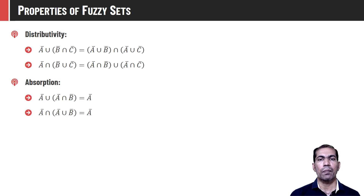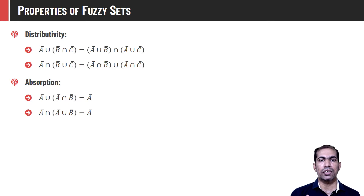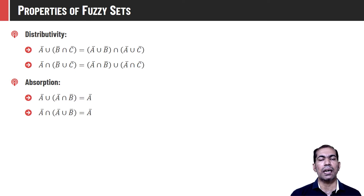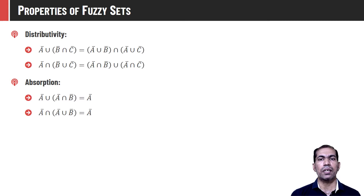Fuzzy sets also follow the property of absorption — that is, A union (A intersection B) equals A. Since intersection always returns the smaller membership value, A intersection B will be the smaller number, and the union of that with A will always give us the maximum value, which is the membership value of the set itself. Similarly, A intersection (A union B) will also be A, because A union B always returns the highest membership value, and when we take the intersection with A, it returns the minimum, which is identical to A.